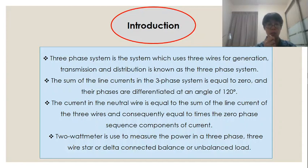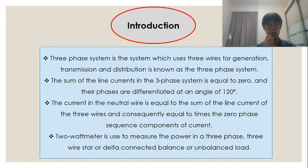This project uses the star connection of both the generator and the load. Furthermore, the two-watt meter method is used to measure the power in a three-phase, three-wire star or delta connected balanced or unbalanced load. In the two-watt meter method, the current coils of the watt meters are connected with any two lines and the potential coil of each watt meter is joined on the same line. The total power is the sum of the powers measured by the two watt meters W1 and W2. This project uses PSIM to understand the function of the three-phase system.